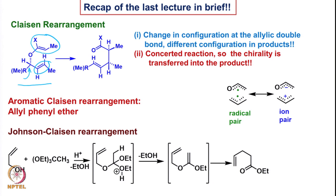We also looked at the aromatic Claisen rearrangement, where allyl phenyl ethers react in a similar fashion — one of the double bonds in the allyl phenyl ether is actually part of the aromatic ring. We also looked at the mechanism from the solvent perspective: polar solvents or hydrogen-bonding solvents such as ethanol and water enhance the reaction rate, mainly because of the possibility of ion-pair type intermediates — slightly charged intermediates — making the reaction much better in such solvents.